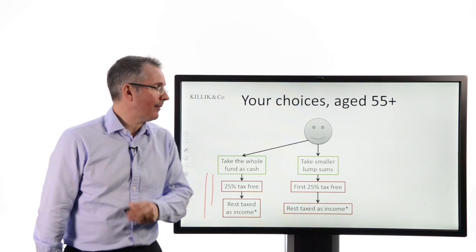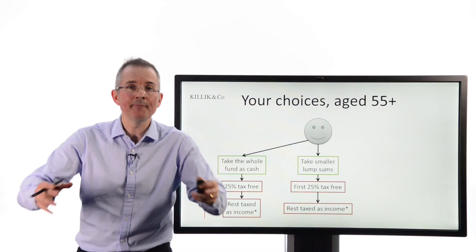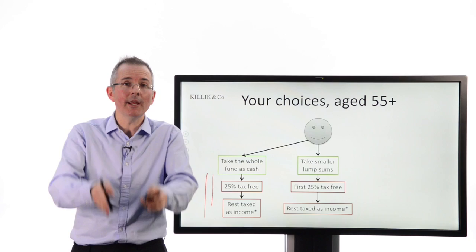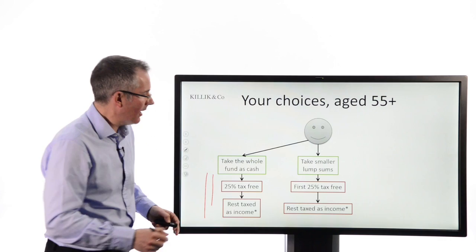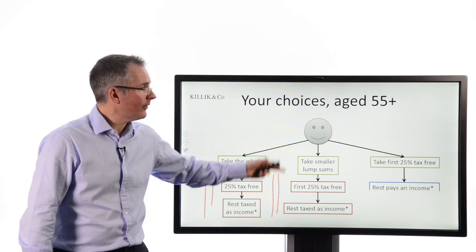Another choice, take smaller lump sums, sort of at your own discretion. But again, the first 25% were tax-free. So if you've got a £100,000 pot, you start drawing out £10,000 a year, let's say. And the first £2,500 is tax-free. The remaining £7,500 is still taxed at your marginal income tax rate. And that's something that the sharks won't necessarily remind you of.